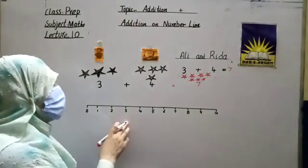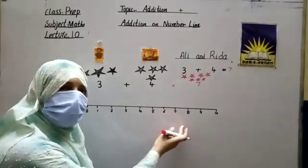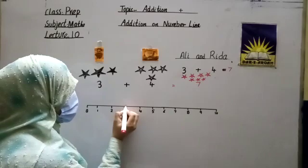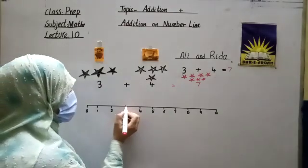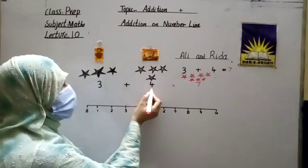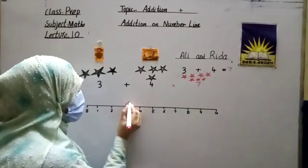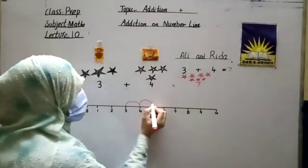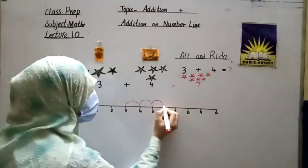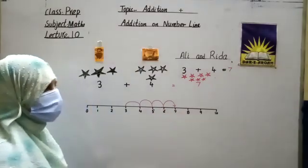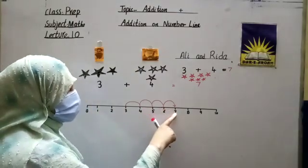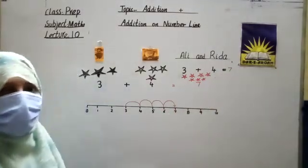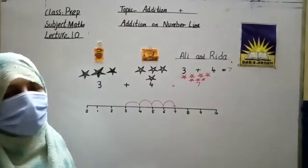Now we solve this question by using the number line. When we use the number line for addition, we move left to right. Ali has 3 stars, so we start at 3. Then we make 4 jumps — 1, 2, 3, and 4. We make an arrow. Now look at the number below — the number is 7. The answer is 7. I hope you learn this very easy method.